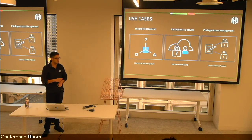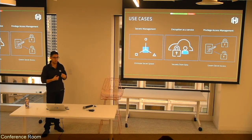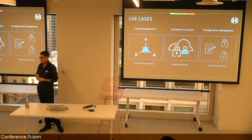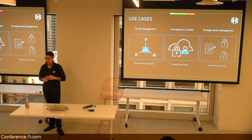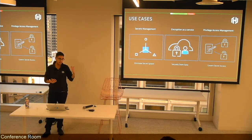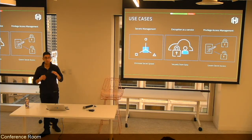Related to that is the privileged access management problem: our machines and apps need all of this access, but so do our human operators. If I'm a DBA or a developer trying to debug something, how do I get AWS credentials, database credentials, or SSH into a machine — privileged access to systems I may not need on a regular basis? And then there's encryption as a service: we have all this data flowing between many different apps, at rest in databases or S3. How do we protect that data everywhere?